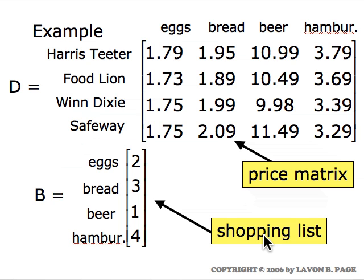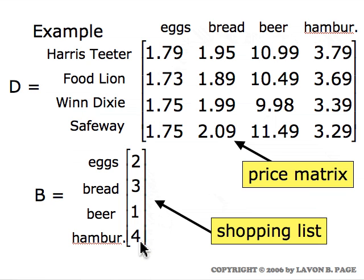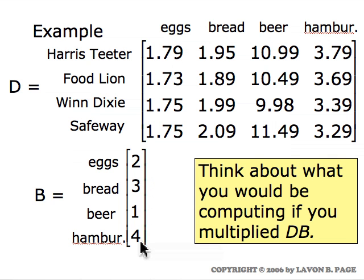Here's an example of matrix multiplication. We have two matrices, D and B. Matrix D is a price matrix — it gives the price of a number of different items at four different grocery stores. The items are a dozen eggs, a loaf of bread, a case of beer, and a pound of hamburger. For example, the price of a dozen eggs at Food Lion is $1.73, the price of a case of beer at Winn-Dixie is $9.98, and so forth. The second matrix B is a shopping list: two dozen eggs, three loaves of bread, one case of beer, and four pounds of hamburger. That multiplication works because we have the same number of columns in matrix D as we have rows in matrix B.